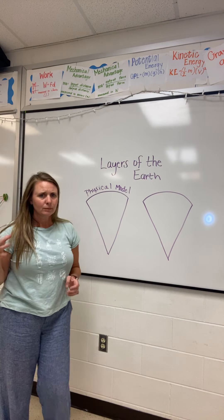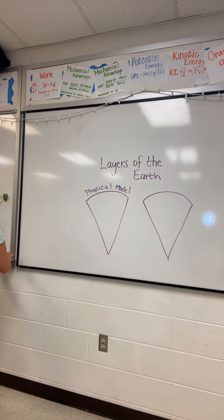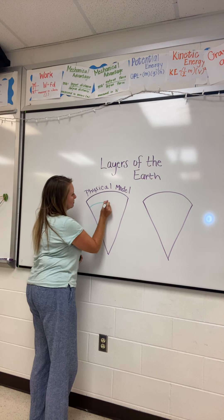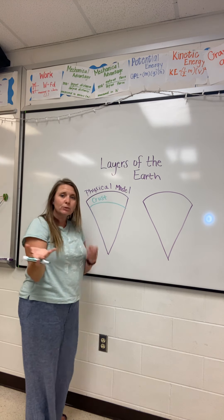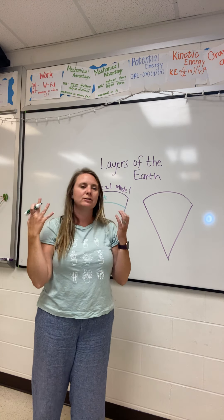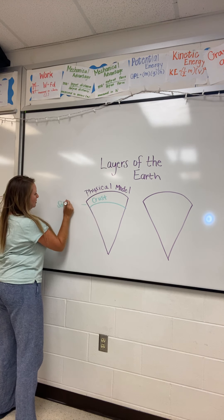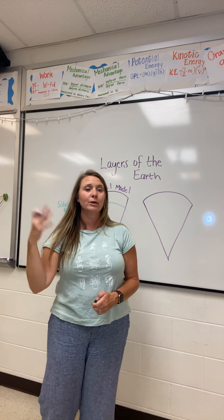With the physical model, there are several different things we're going to cover. I'm going to switch different colors as we move through. Starting with the surface, which is just called the crust. The crust is a solid surface — solid rock. We can stand on the crust; we don't fall through or anything of that sort.